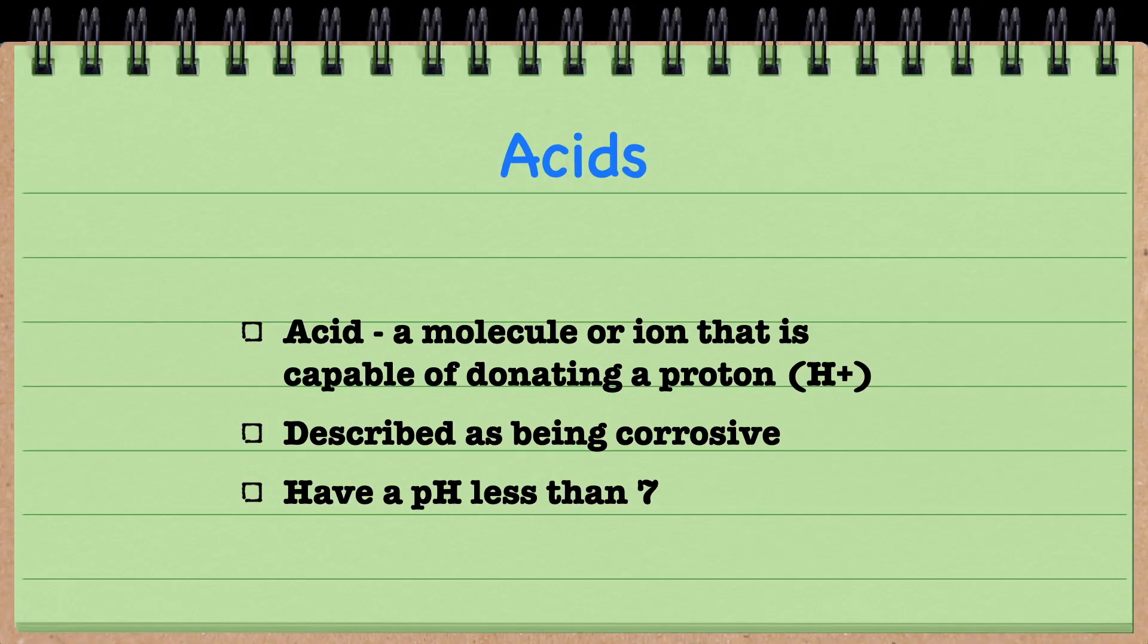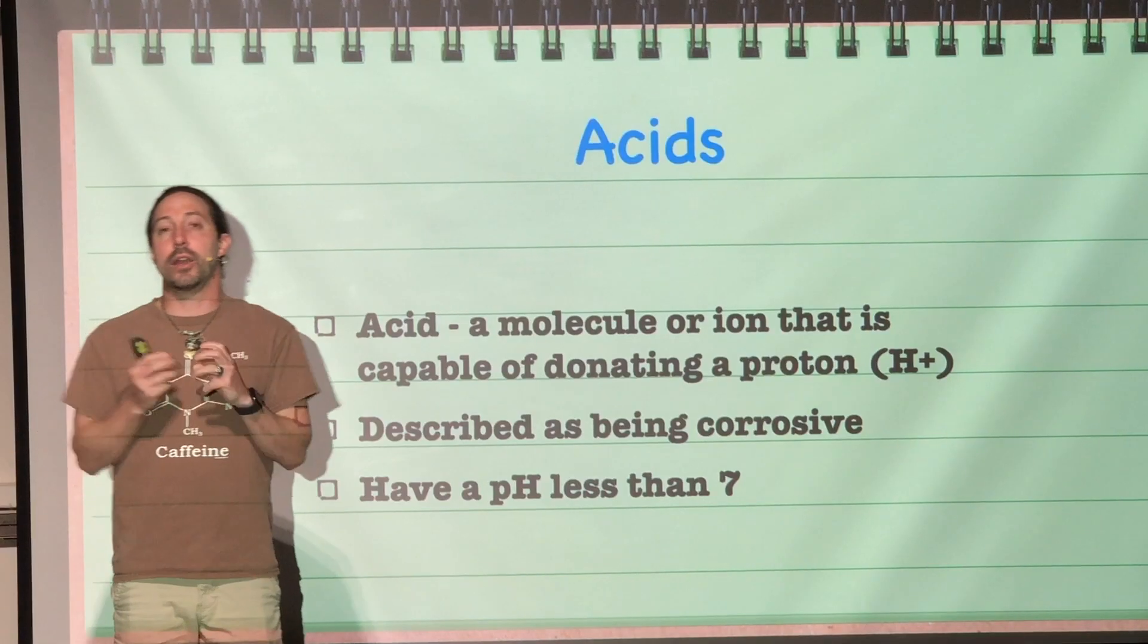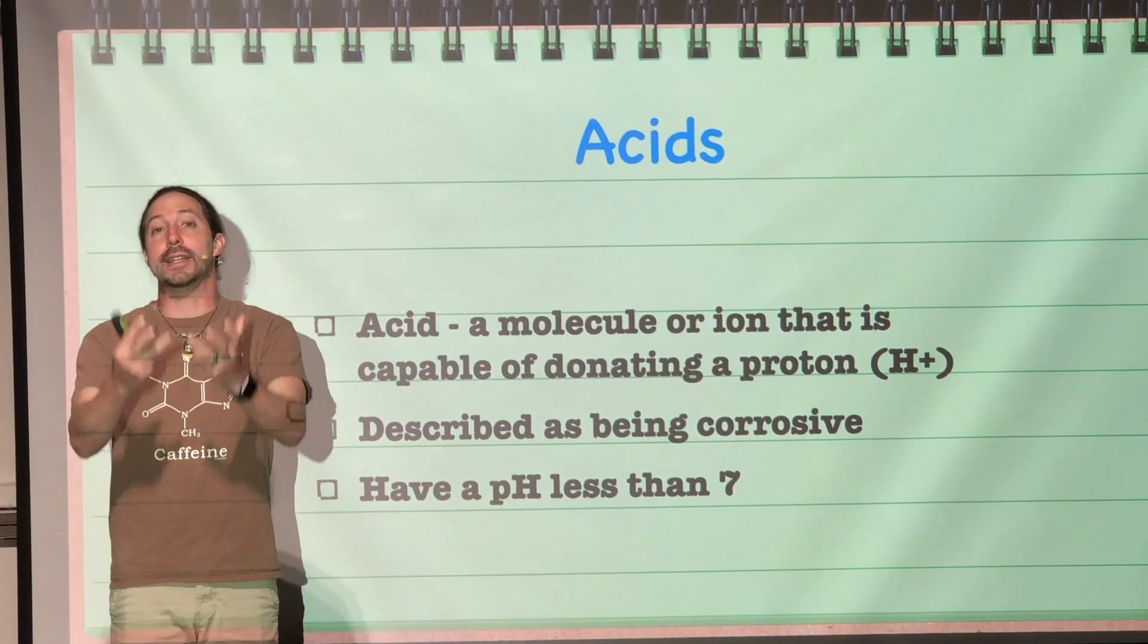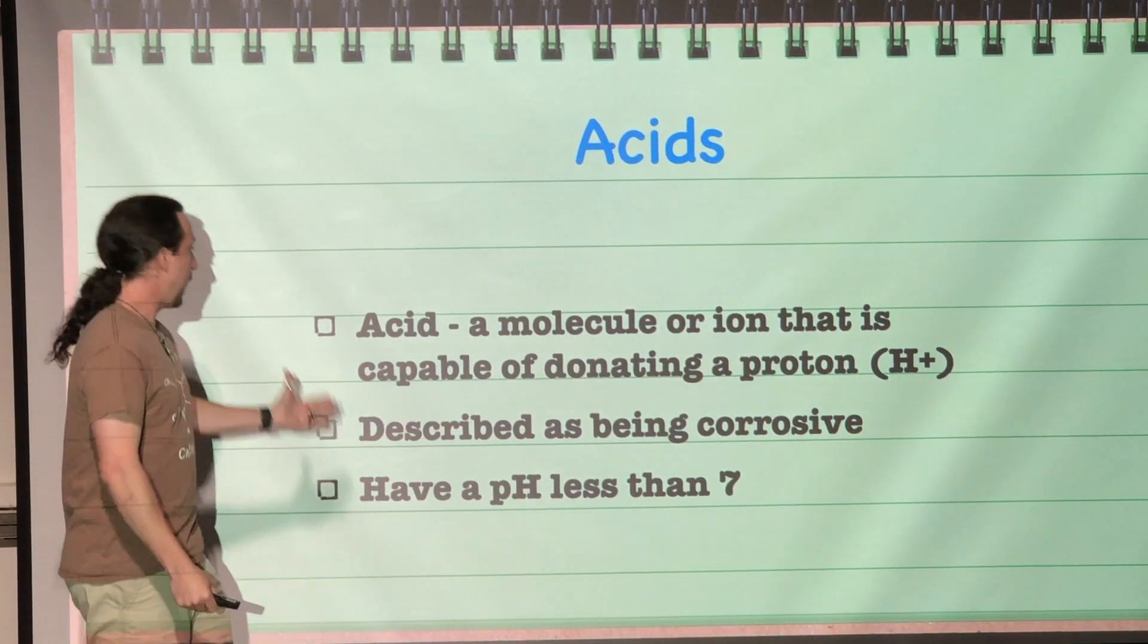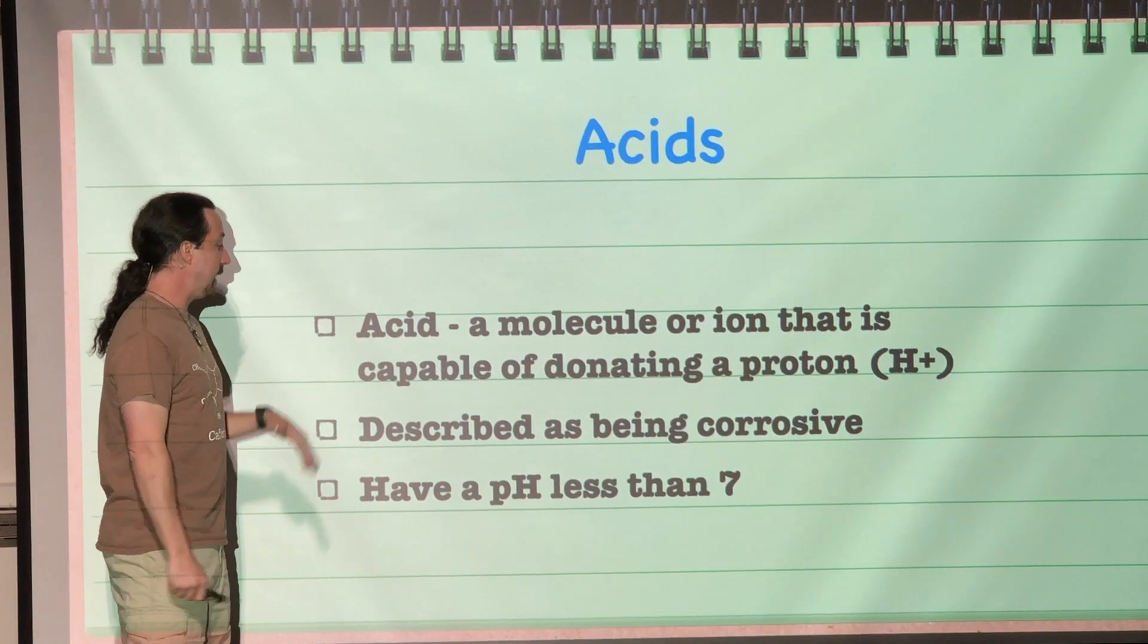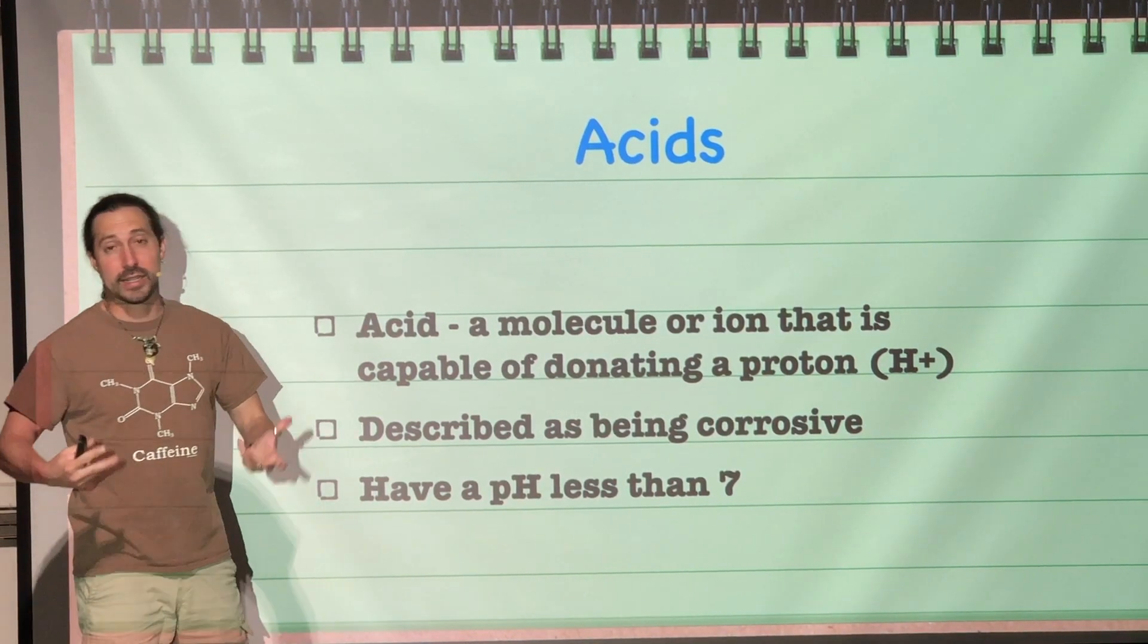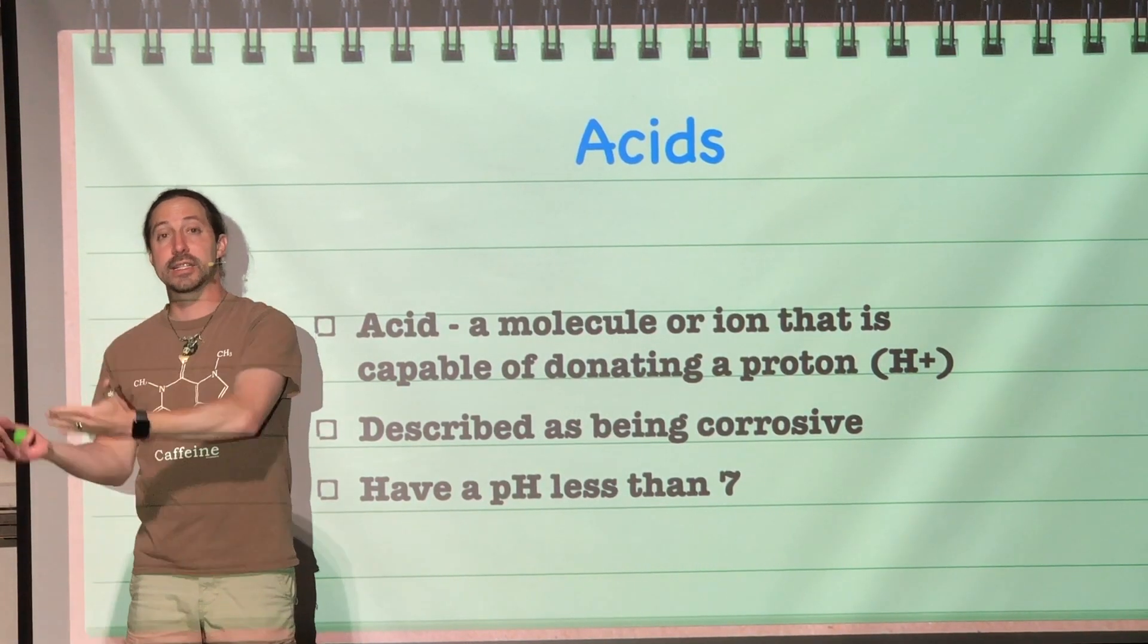Acids, they are going to donate a proton. That is what acids do. They are, in other words, going to increase the hydrogen ion concentration of the solution. And they are described as being corrosive. And anything that does that would have a pH less than 7.